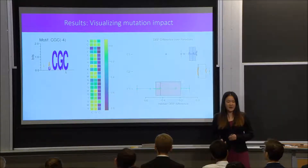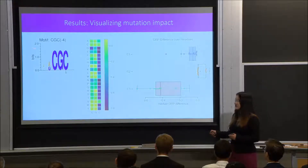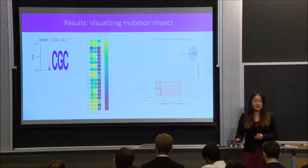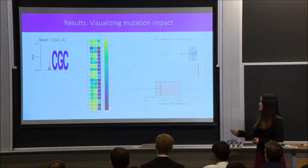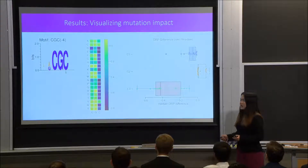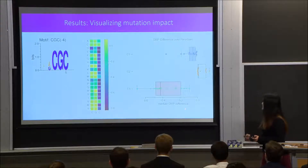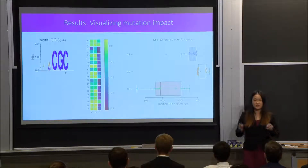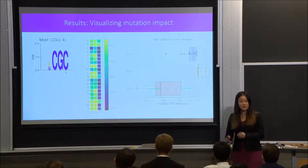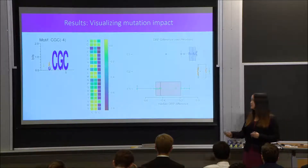To visualize the mutation impact, we employed color heat maps. We are particularly analyzing the CGC-negative-four motif, one of the top five length-three motifs identified in our first objective. As shown in this color heat map, there are significant high-impact mutations in the third column, corresponding to the dark-colored cells. We generated a box plot to further elucidate these differences: the box corresponding to the C3 position is much more shifted to the left than the C1 and G2 positions, signifying that mutations in the C3 position cause a much greater degron regulatory impact decrease.